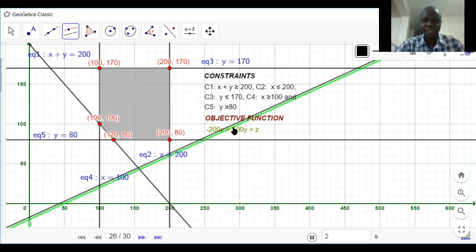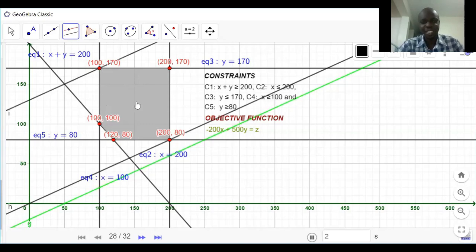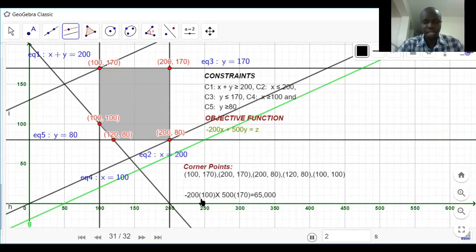So you test the two values in your objective function. So those are the two points that you need without wasting a lot of time testing so many possible points within the feasible region. Indeed, if you try 100 and 170, you get... I think it's 100 and 170 gives 65,000. So you can see how easy that was. Instead of taking all these plus any other that is within this region.